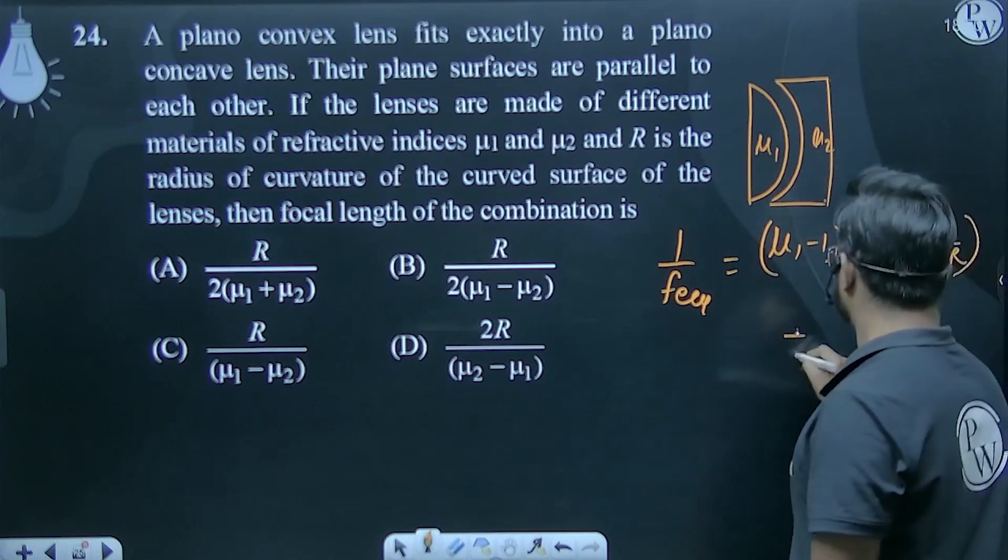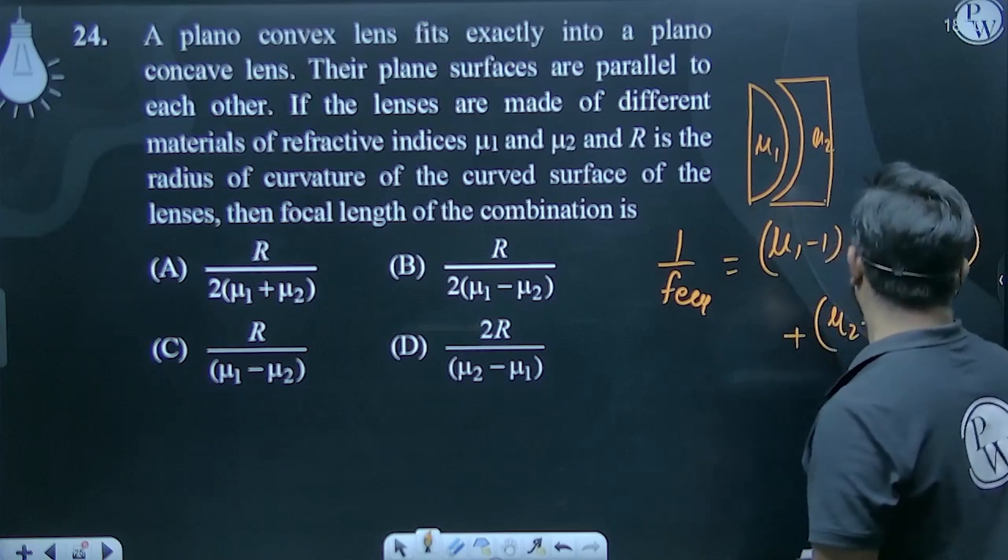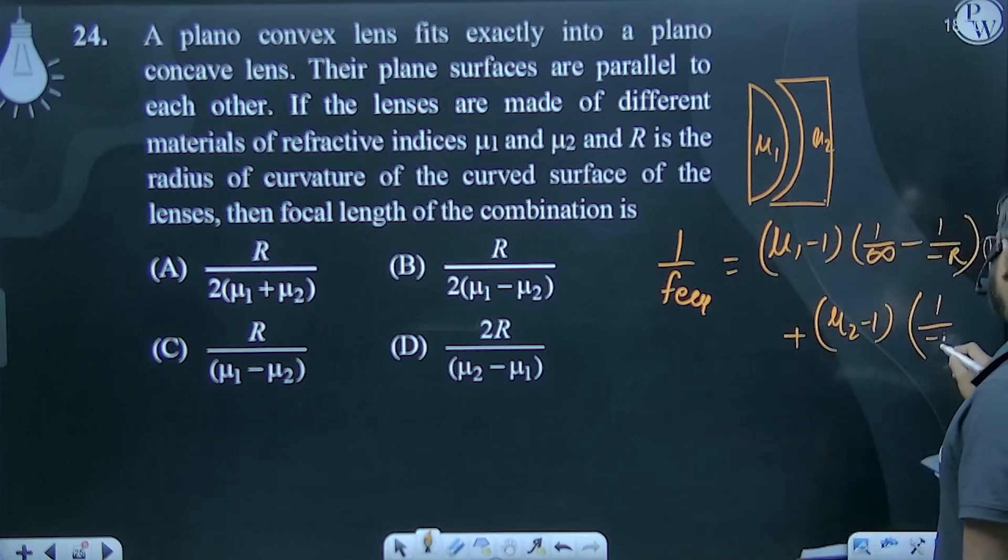Plus mu 2 minus 1, 1 by minus R, minus 1 by infinity.